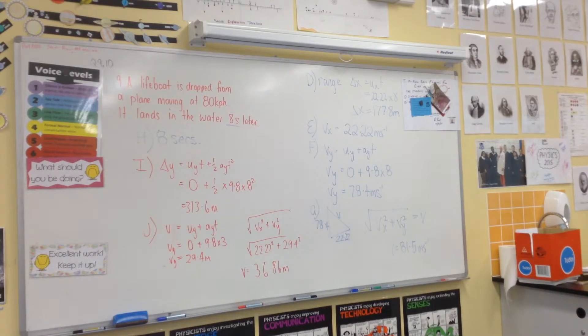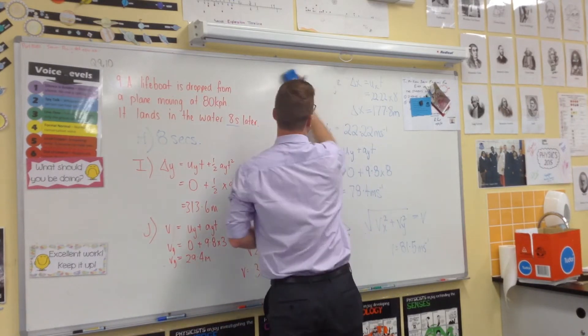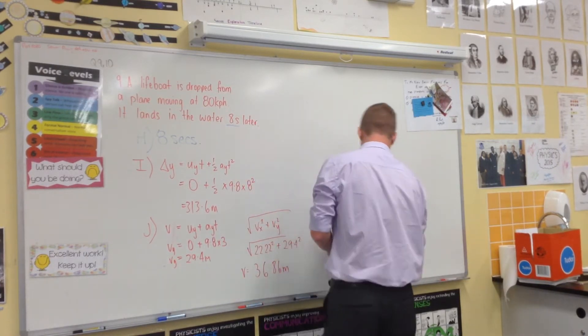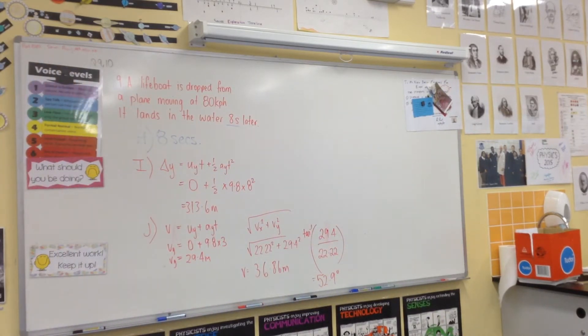Now to work that over, angle—we do a shift tan, ABC. And did you get 52.9 degrees to work out an angle? I don't know if I'm going to get through to question 10 today. Let's see. So to work out that angle, you do shift tan: 29.4, 22.22, and that will give you 52.9 degrees. So that is J.